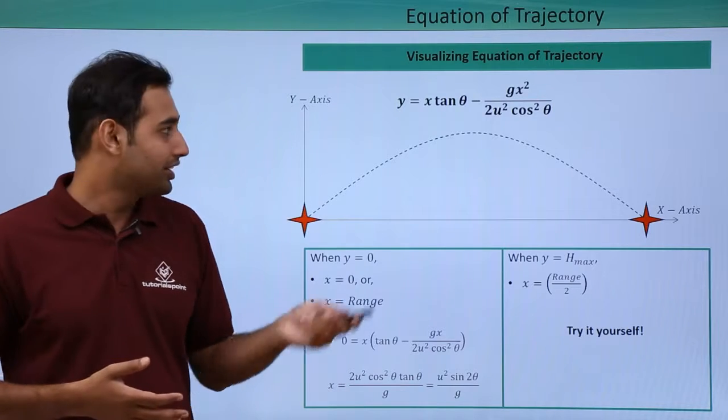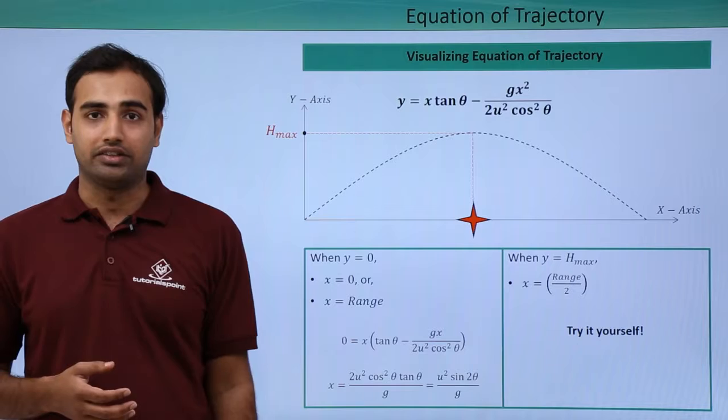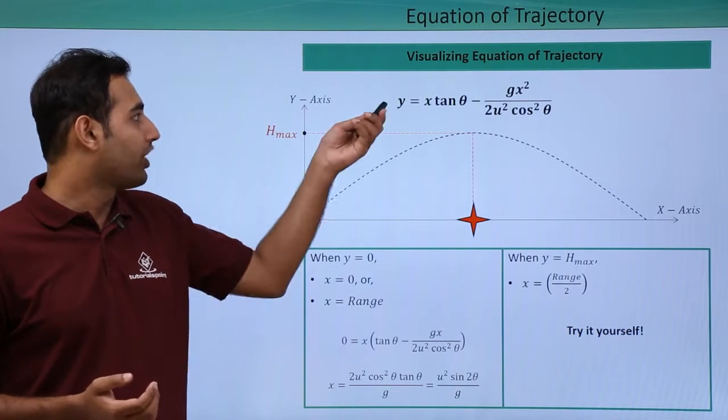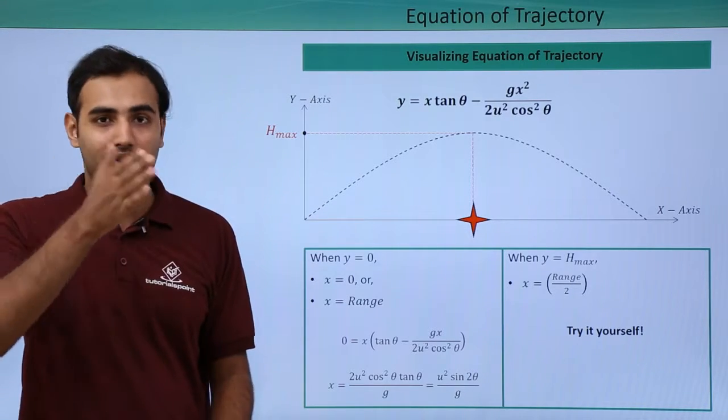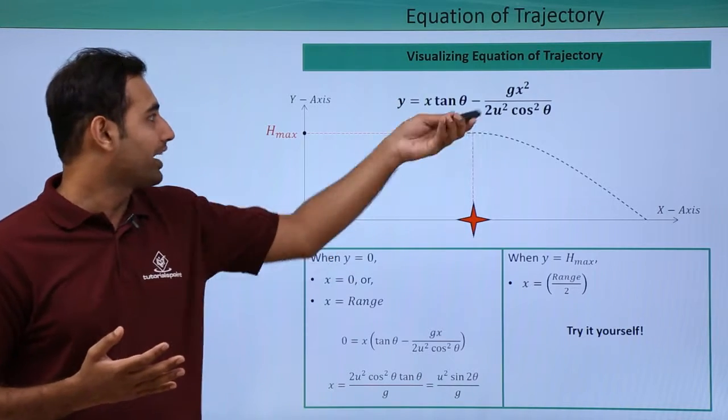Now another important thing you can see that at maximum height h max, what is the value of x? So for that you can put the y value as h max, which is u square sine square theta by 2g. Once you put y as that much and solve for x,